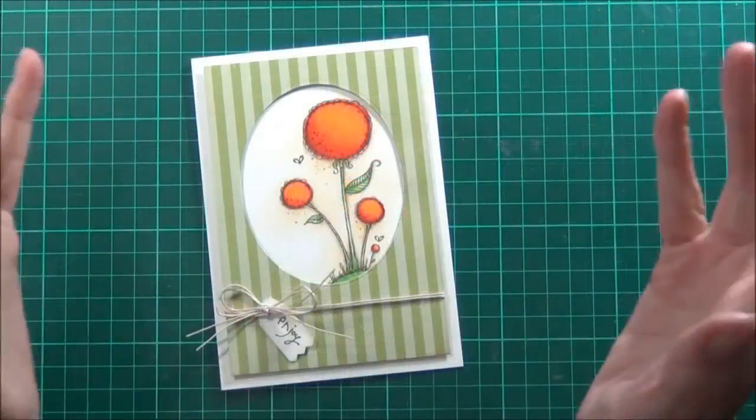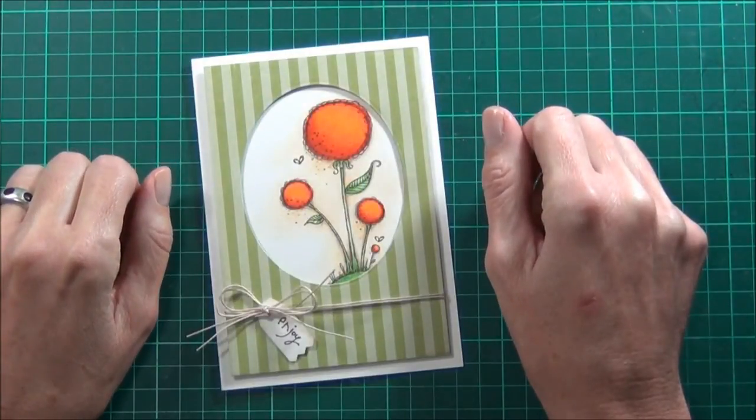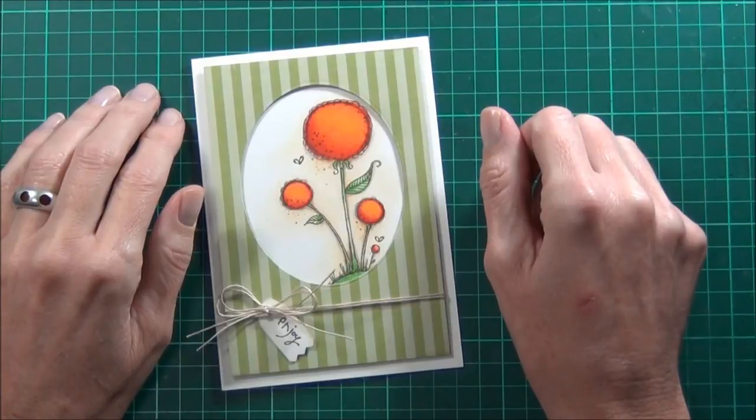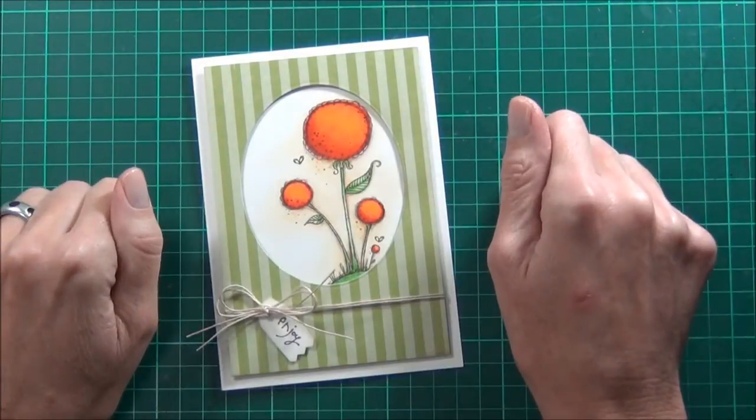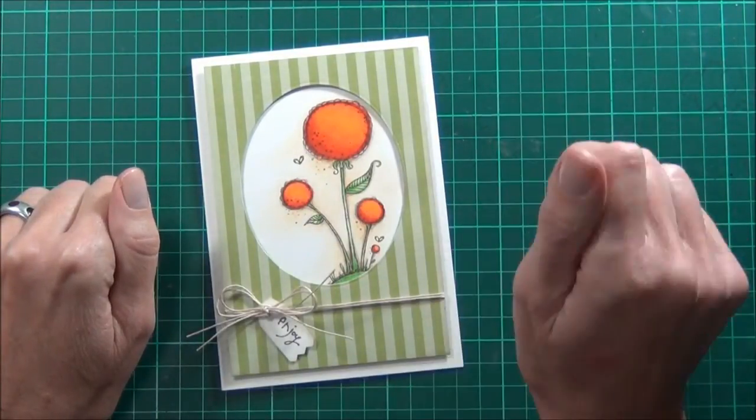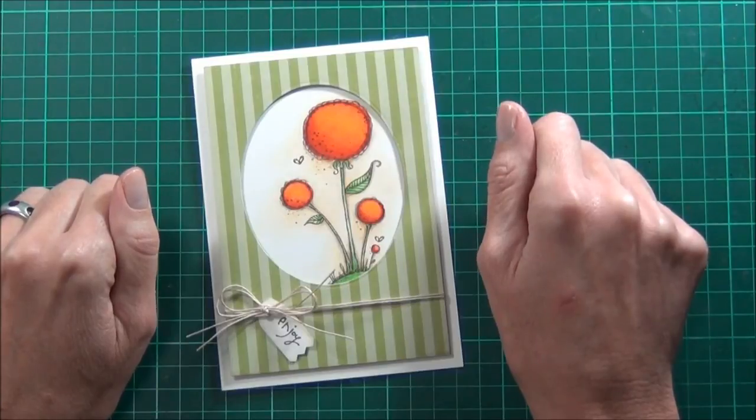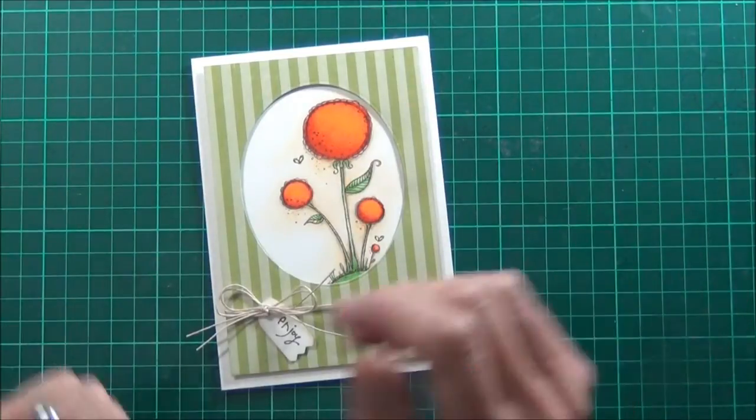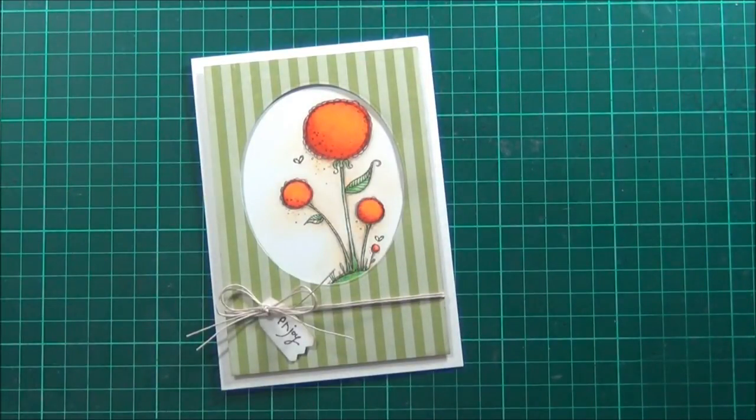So I love using the Copics and using the Prisma pencils together. I think they look really great together, and you can find all the stamps that I've used at Purple Onion Designs. Or I'll have the links over at my blog. So thanks for watching and happy paper crafting. Bye!